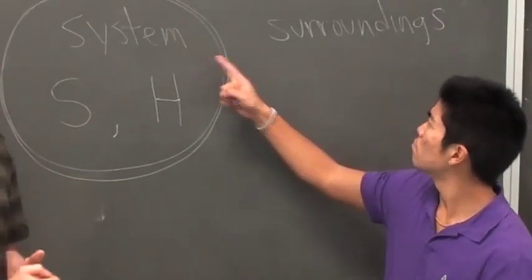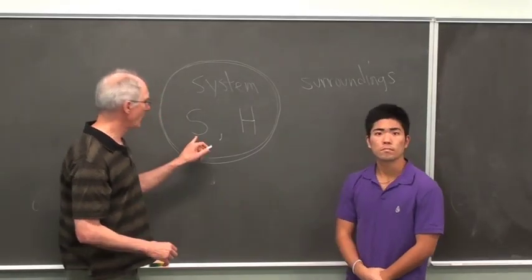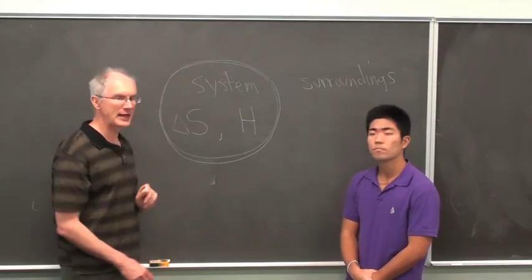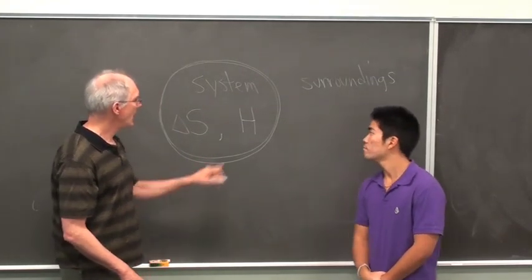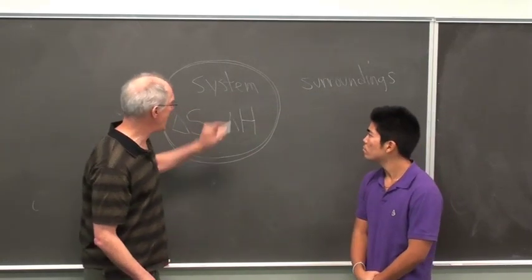the system and the surroundings. There are actually two parameters that are important. One is S or the entropy, or more specifically delta S, the change in entropy. And the other piece is heat transferred, delta H.